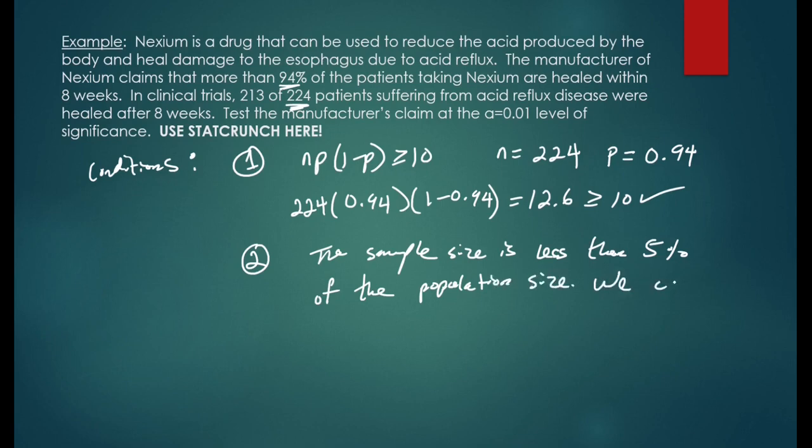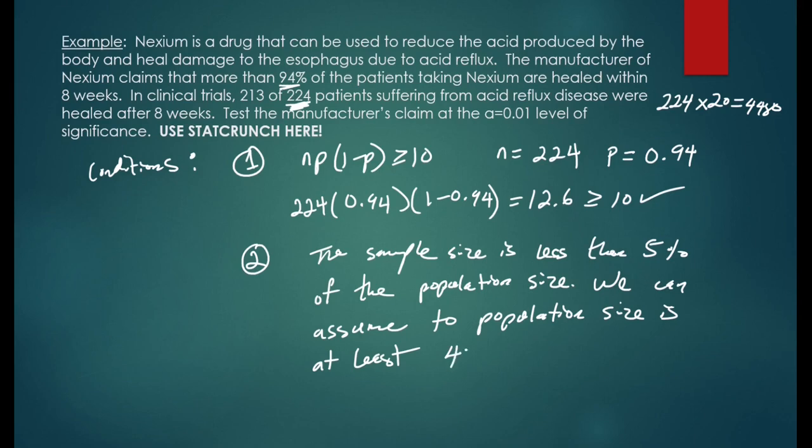We can assume the population size is at least the sample size, which is 224, multiplied by 20. This yields a value of 4480. We can assume the population size is at least 4480.